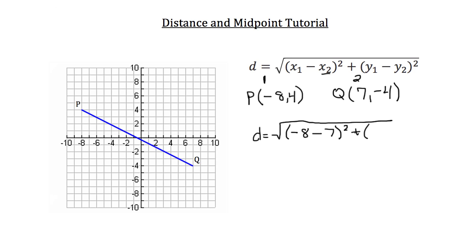plus the y coordinate of the first point, which is 4, minus the y coordinate of the second point, which is negative 4, quantity squared.